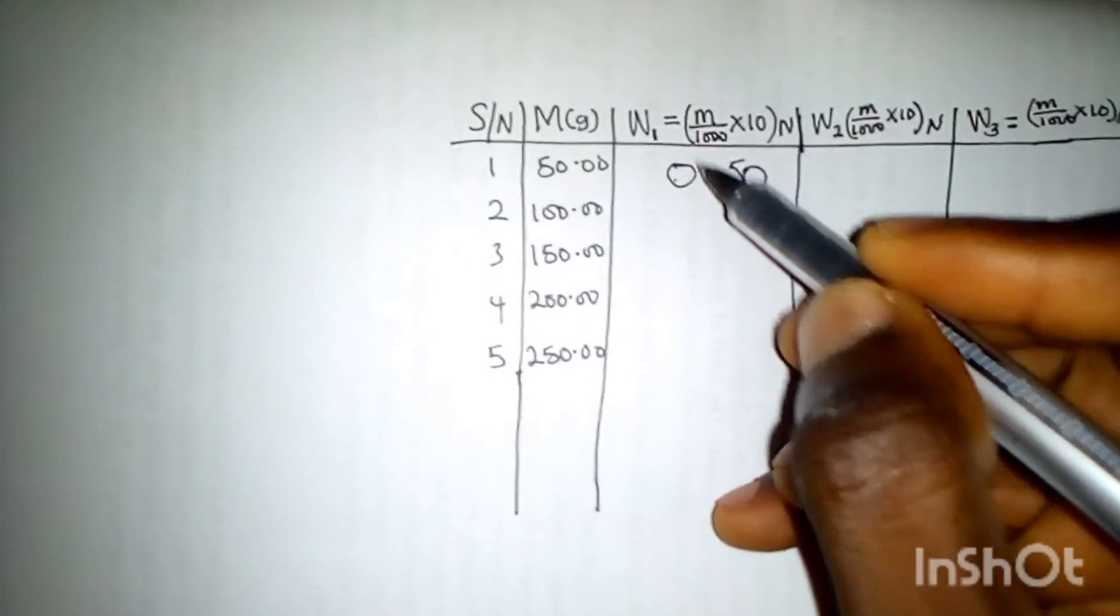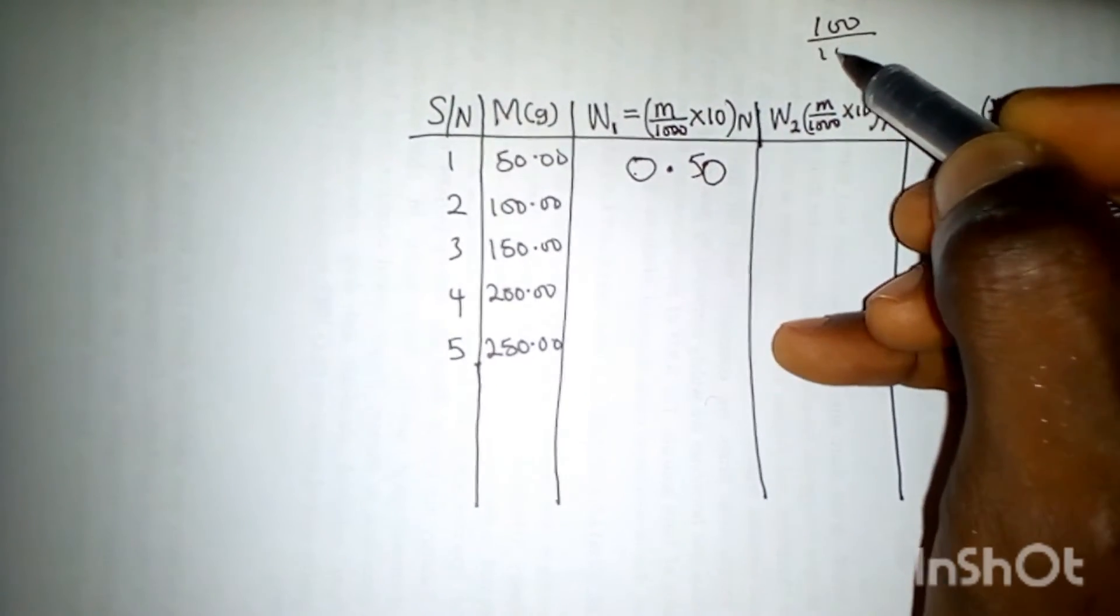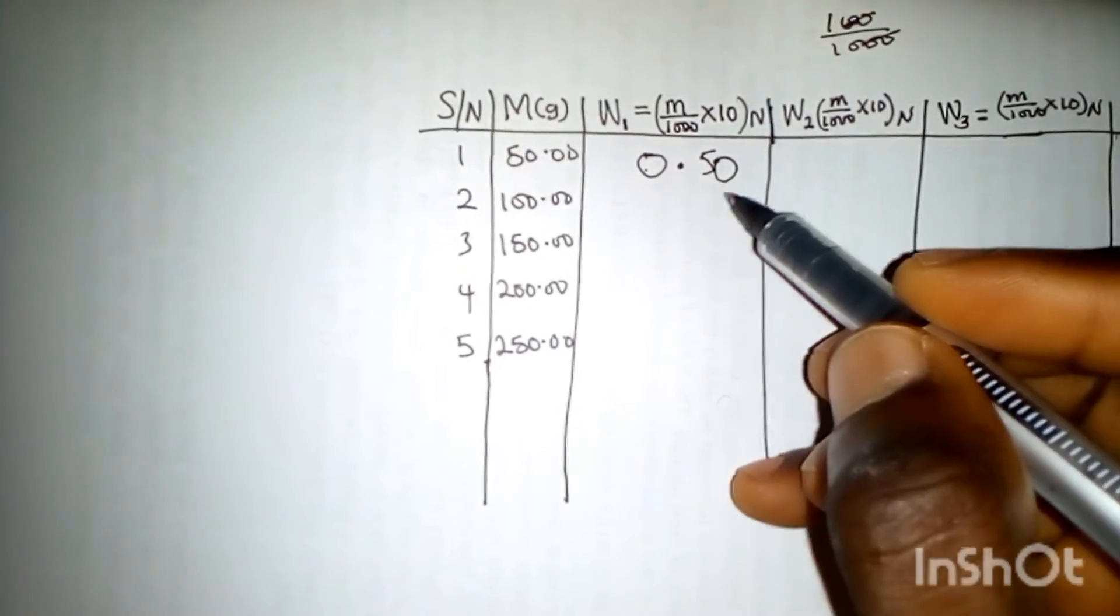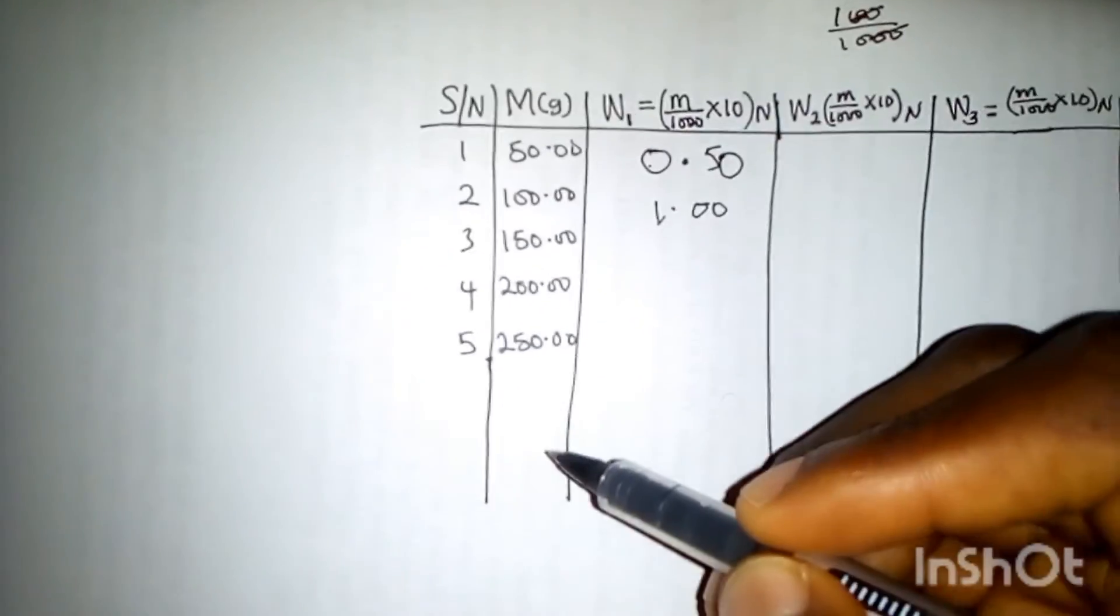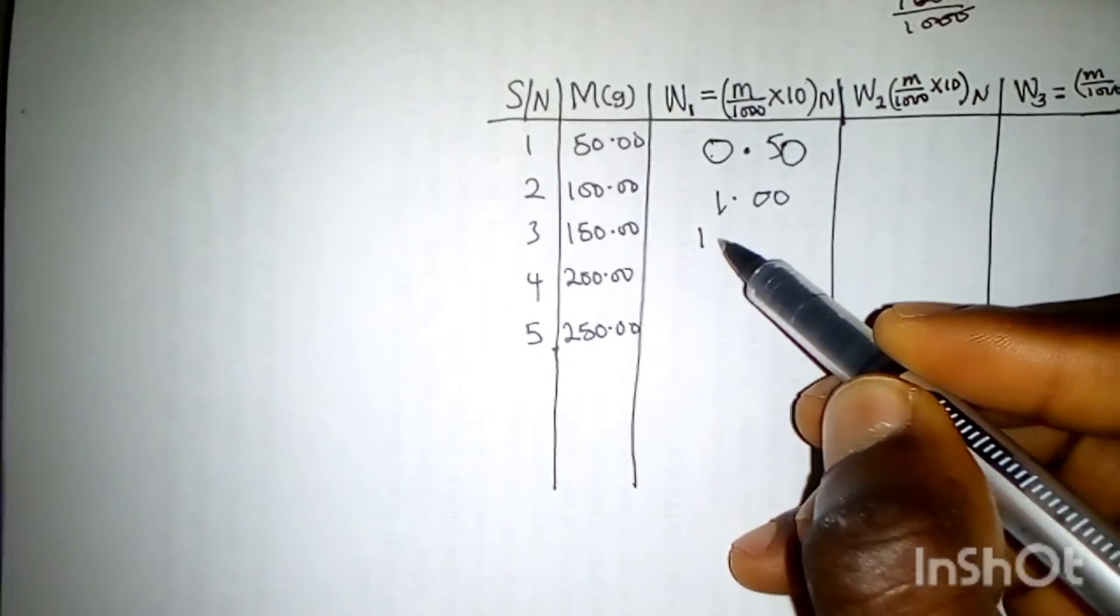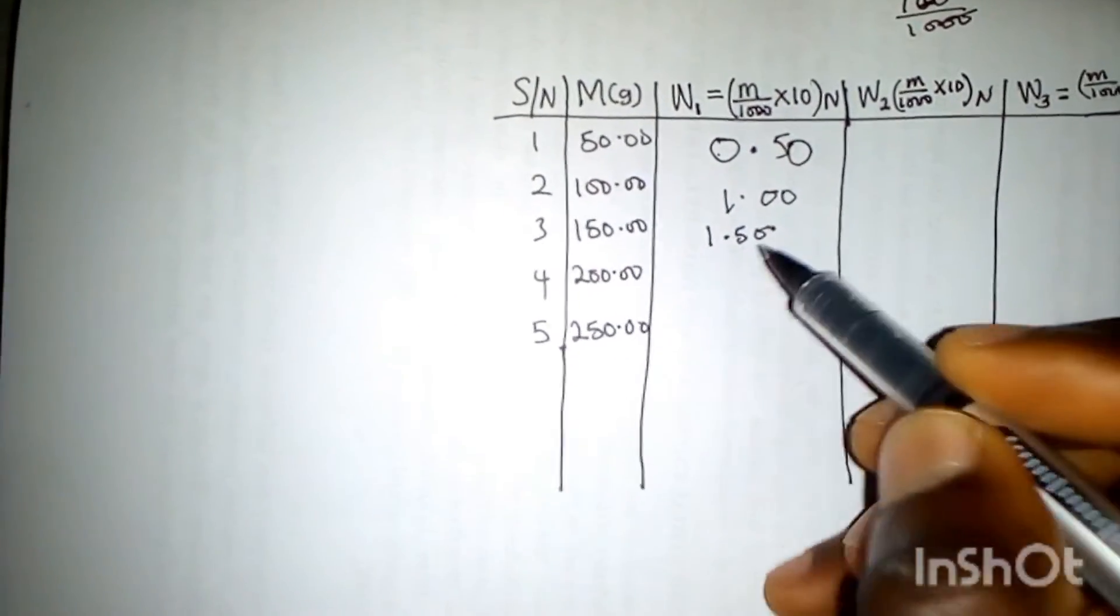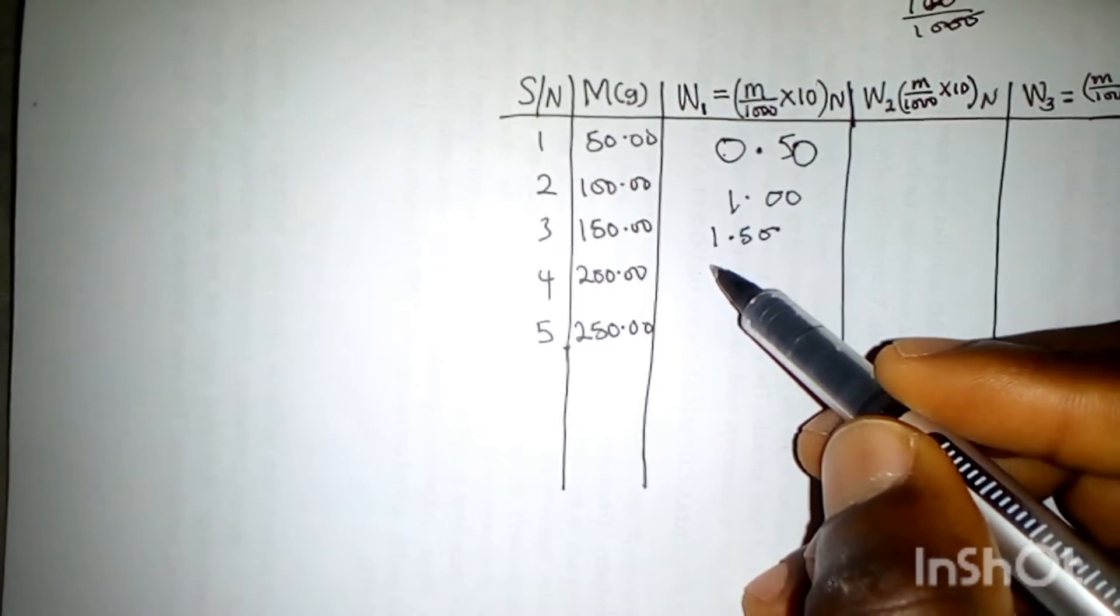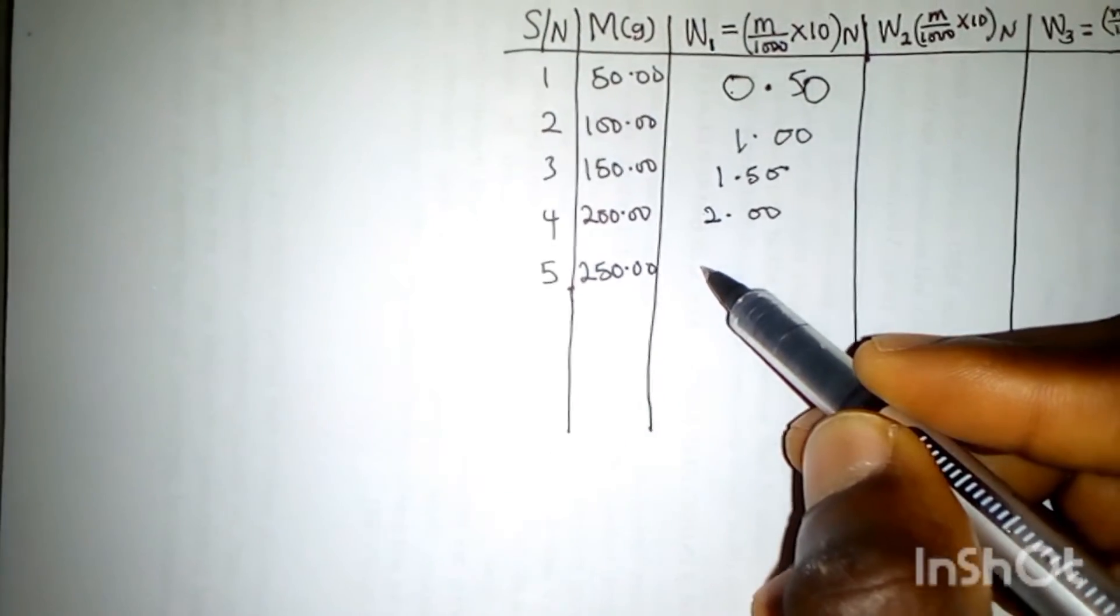100 over 1000 gives us 0.1. Multiplying that by 10, I'll have 1.00 Newton. The next one gives us 1.50, then 2.00, then 2.50.